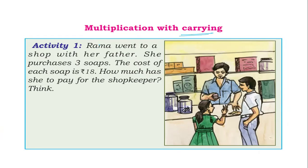They are given an activity. Rama went to a shop with her father. She purchased 3 soaps. The cost of each soap is 18. How much has she to pay the shopkeeper? 18 into 3, 3 eights are 24, put 4 in ones place and carry 2, 3 ones are 3, 3 plus 2 is 5. They will pay 54 rupees to the shopkeeper.